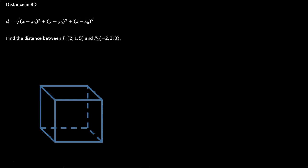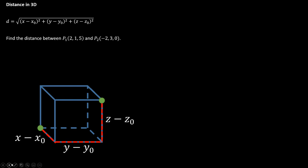Distance in 3D. In two dimensions we had a distance formula that came from the Pythagorean theorem. In three dimensions we're going to have to adjust that just a bit. If I want the distance between two points, I need to recognize that we're traveling in the x direction, the y direction, and the z direction — changing in three different directions — so our distance formula needs to incorporate each of these three changes. We're just adding on this third dimension, incorporating the change in z.